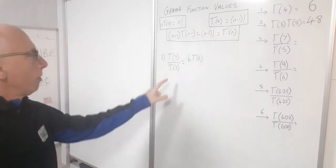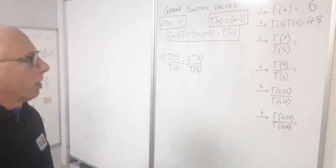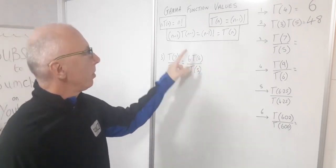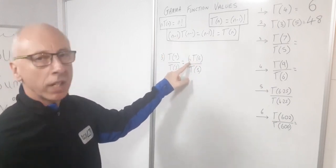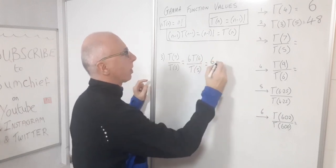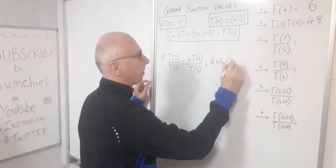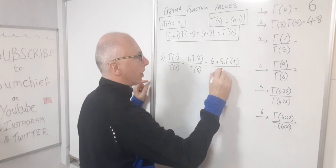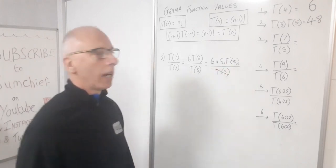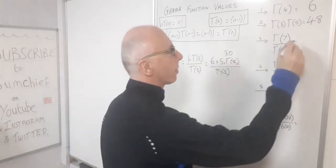So now we have gamma(7) over gamma(5) = 6 times 5 times gamma(5) over gamma(5). The gamma(5) terms cancel, and we're left with 6 times 5, which is 30. So the answer to question 3 is 30.